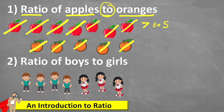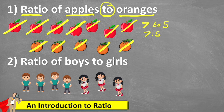So our ratio is 7 apples to 5 oranges — that's the first way of showing it. Then we could show it using the colon, which is the symbol for ratio, so we could show 7 colon 5. That's the most common way of showing it. But we could also show it as a fraction, because ratios and fractions are very closely linked, so we could write 7 over 5 — we have 7 apples to every 5 oranges.